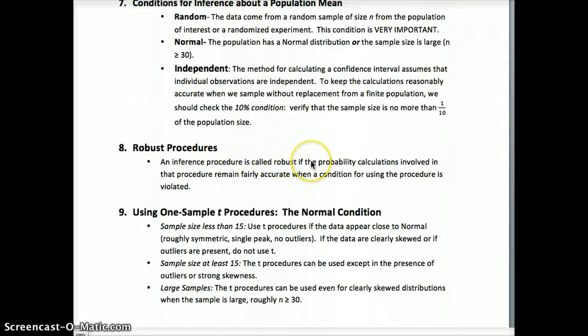We'll talk about robust procedures some more in class. It's just when our conditions can still hold up, even if we haven't met 30. So if we have a sample size less than 15, the data has to be pretty close to normal, roughly symmetric with no outliers. And we can still say the normal condition's met. If it's at least 15, we can use them unless we get the presence of really strong skewness. And then t procedures hold up for values above 30. So these are kind of like slight exceptions that we'll go over in class.